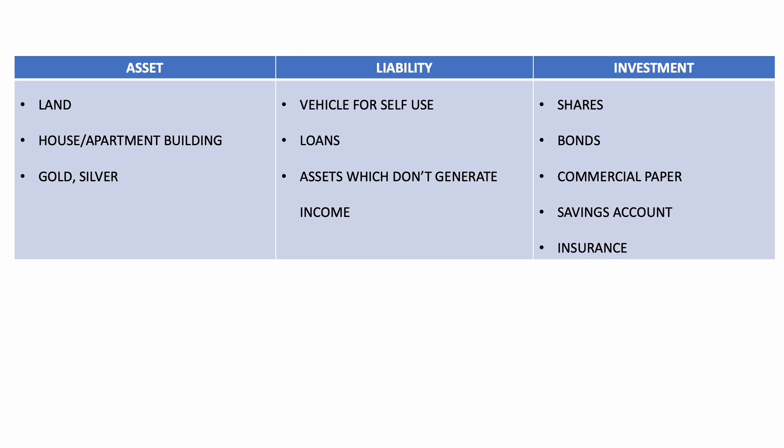So what are the things you can invest in? We have shares, bonds, commercial paper, and also savings accounts and insurance, which have low returns but are also a type of investment.